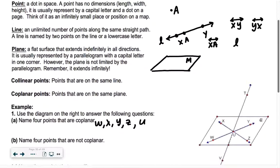What about point Q? There is no point Q — it was plane Q. So four points that are not co-planar: I could have X, U, and Y — those are on the same plane — but I would just need a fourth point that is not on the same plane, so like T would not work.